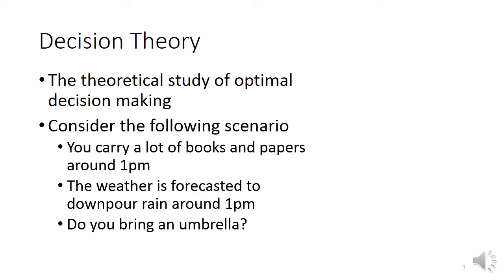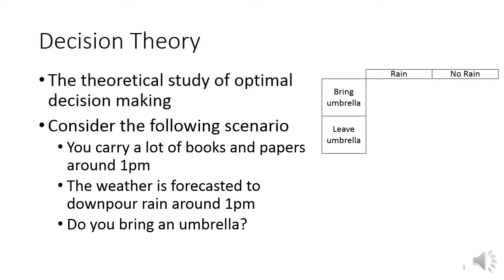Let's consider the following scenario. Suppose you carry a lot of books and papers around one o'clock on some given day, and you look at the weather before you go out and it says it's forecasted to downpour rain around 1pm. You're thinking you're not sure you want to carry your books and papers around if they're going to get wet. Maybe you should bring an umbrella. So the question is: should you bring an umbrella? One way to think about it is to consider all the possible scenarios — the probability that it's going to rain, the probability that it's not, and what would happen if you bring an umbrella or if you don't.